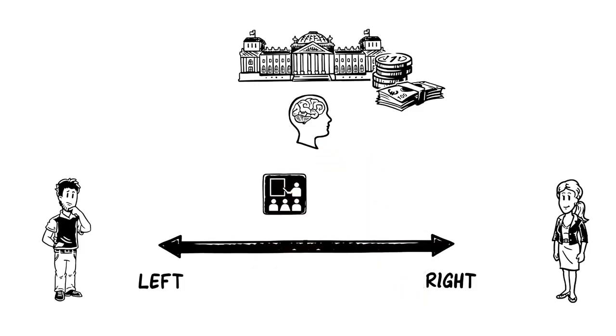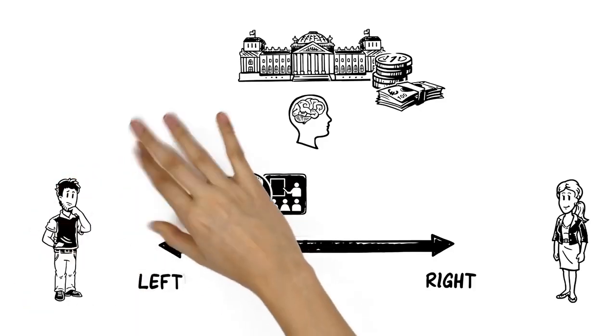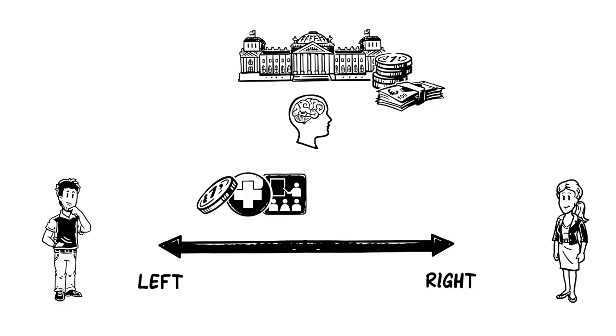Should the government run schools, hospitals and redistribute wealth? At the far left, all private property is abolished and resources are communally owned.